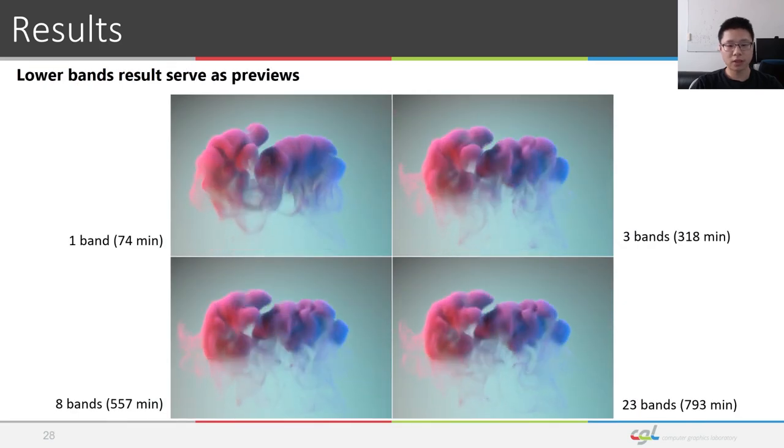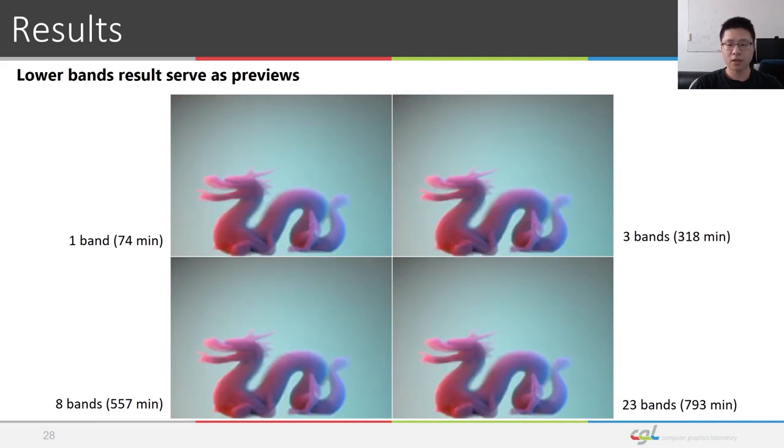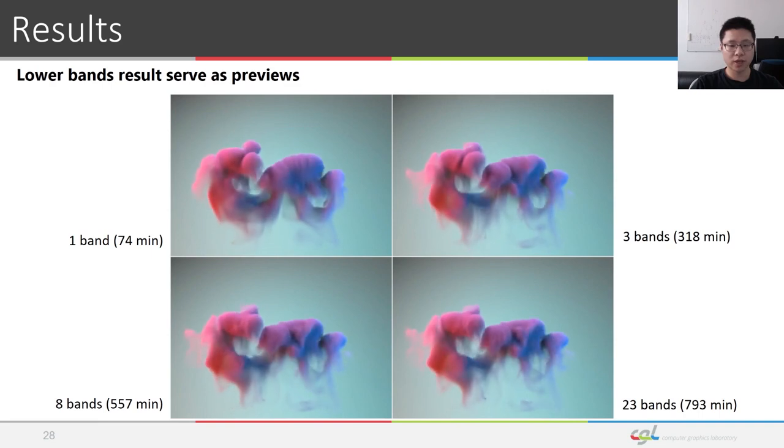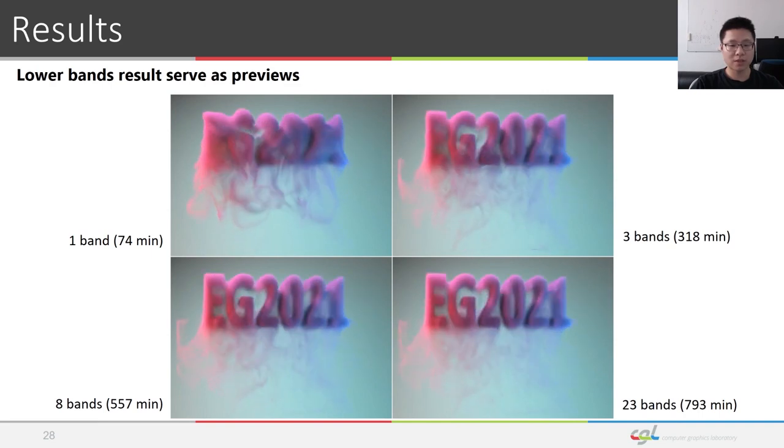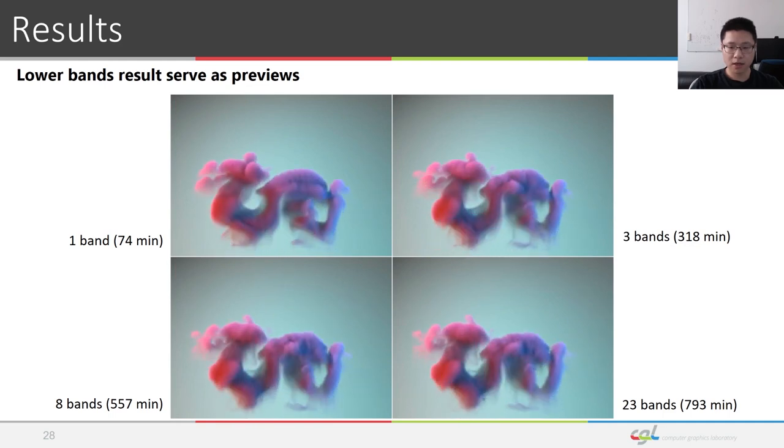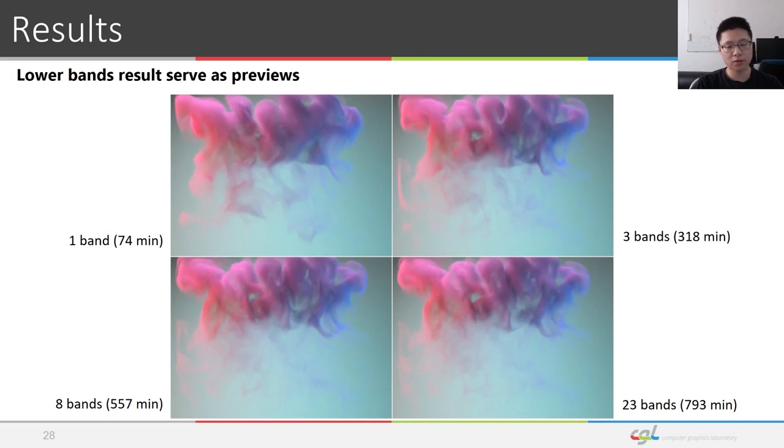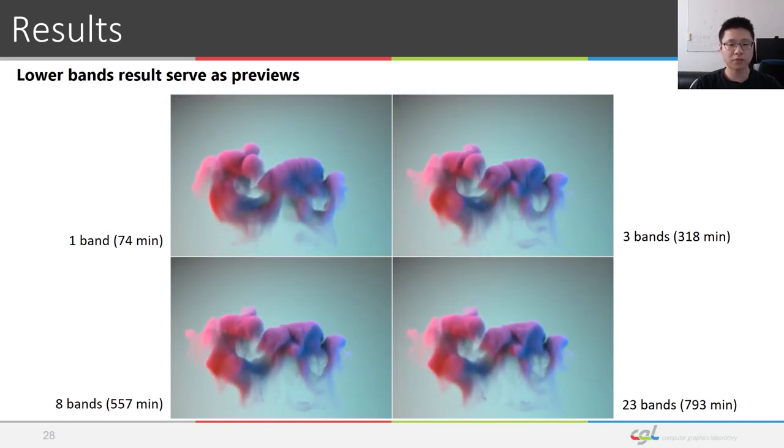Force fields, including only lower frequency bands, require less computational time, and can serve as a preview of the final results, which is especially useful for authoring simulations. Once higher frequency bands are added, results display localized details while also preserving the main trajectory of the smoke.